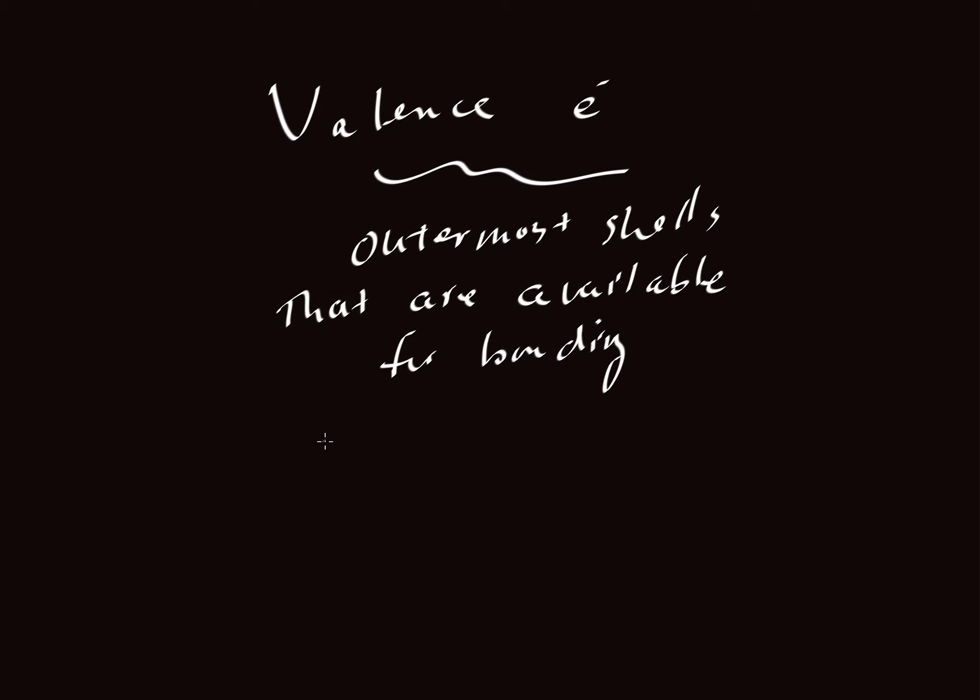Now, we have other ways of talking about the very same thing. This term valence is very common. We talk about so-called valence states or valence electrons. The valence electrons, let's just write an E minus for electrons. These are the electrons that are in the outermost shells that are available for bonding.